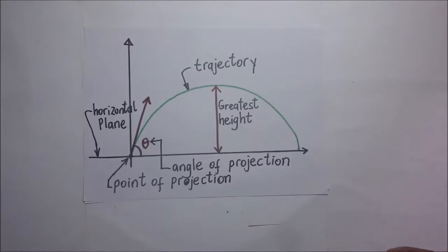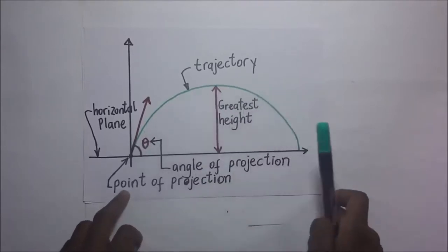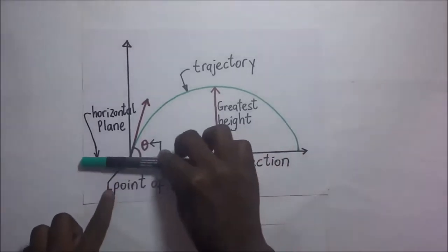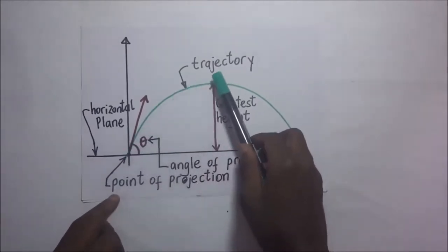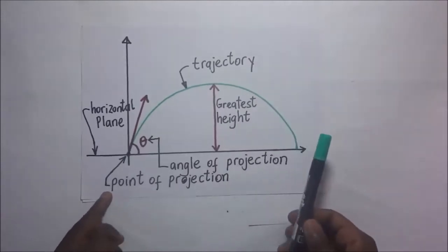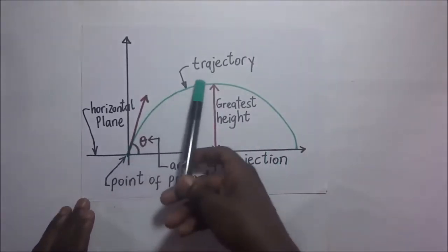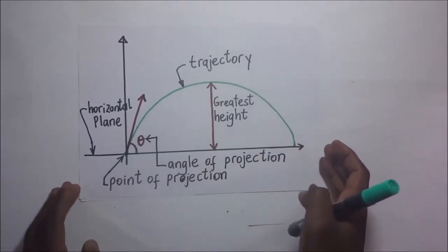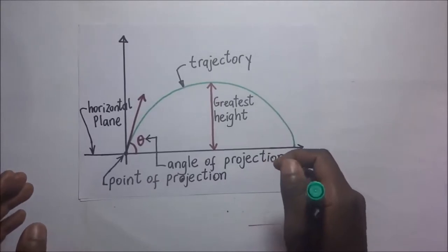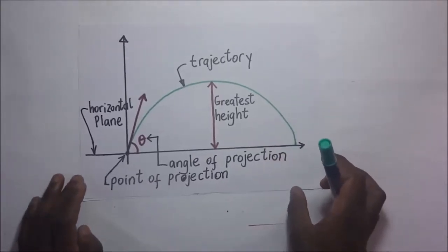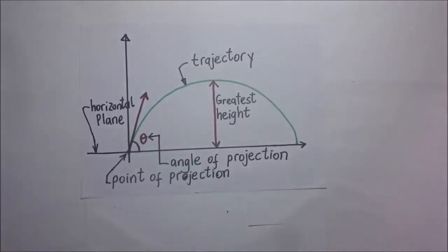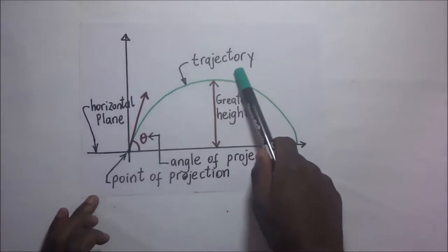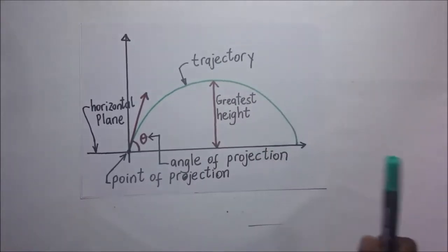A projectile motion is basically a particle that is thrown at an angle to the horizontal, under the influence of gravity. In other words, if I kick a ball up or throw a stone into the air and it comes back down, it creates what I'm calling projectile motion, and this is always influenced by gravity. In our study of projectile motion, we shall assume that the forces of air resistance are negligible.